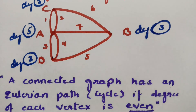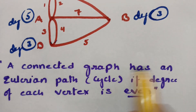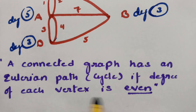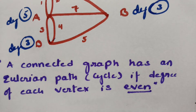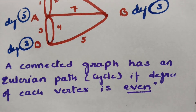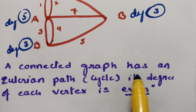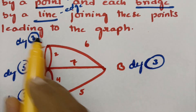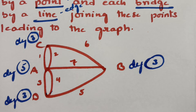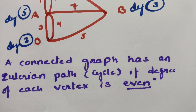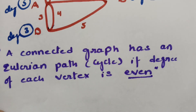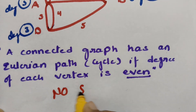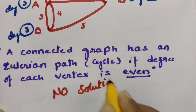A connected graph has an Eulerian circuit (cycle) only if the degree of each vertex is even. According to this rule, since the degrees of all vertices here are odd (3, 5, 3, 3), the Eulerian path condition is not satisfied. Therefore, Euler concluded that this problem has no solution — it is impossible.